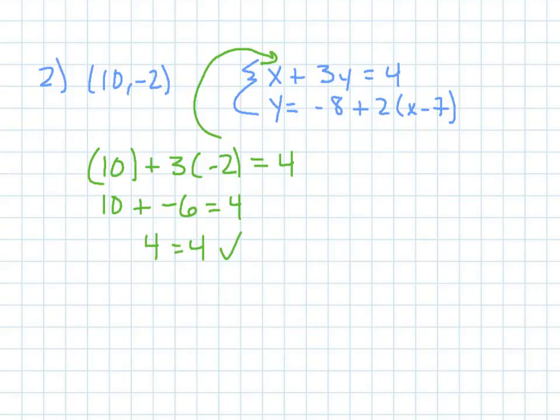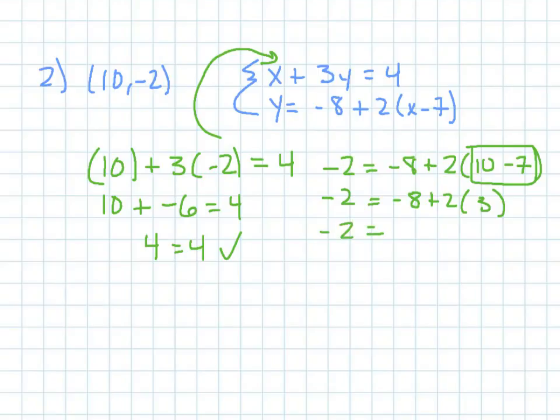So, it looks like we're plugging in negative 2 first for y, equals negative 8, plus 2 times, we'll plug in 10 for x, minus 7. Now, I don't do anything for the negative 2 or the negative 8 yet. 10 minus 7 is 3. Order of operations tells me to do that first. 2 times 3 is 6. And negative 8 plus 6 is equal to negative 2. Check mark.